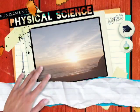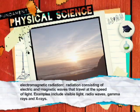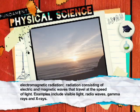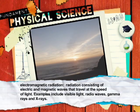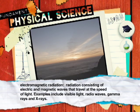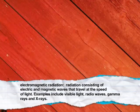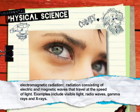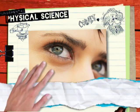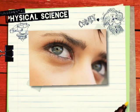The sun emits electromagnetic radiation with a wide range of wavelengths. Only a small proportion of this radiation can be detected by our sensors. This portion of wavelengths is known as visible light or white light.